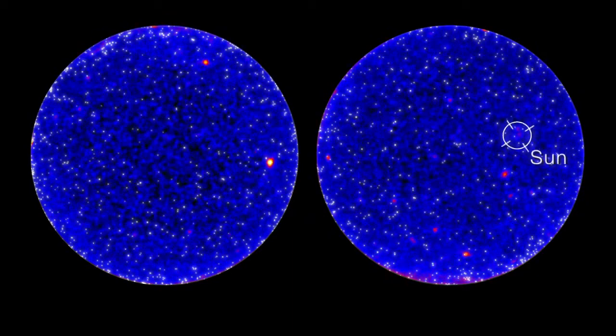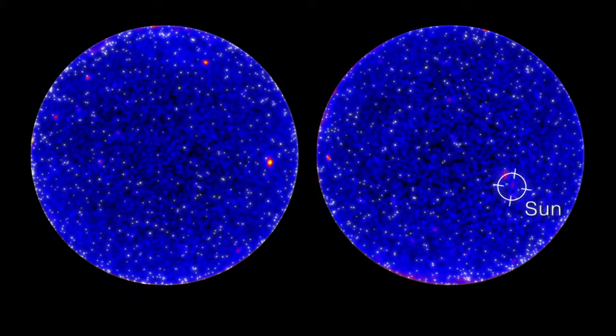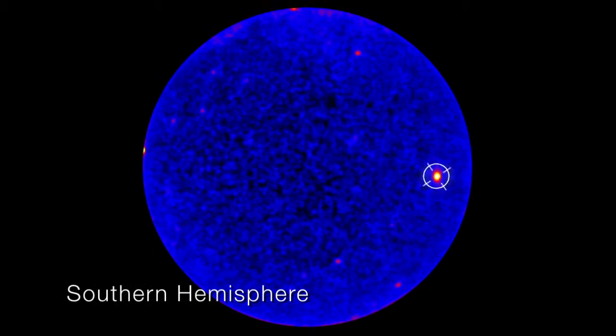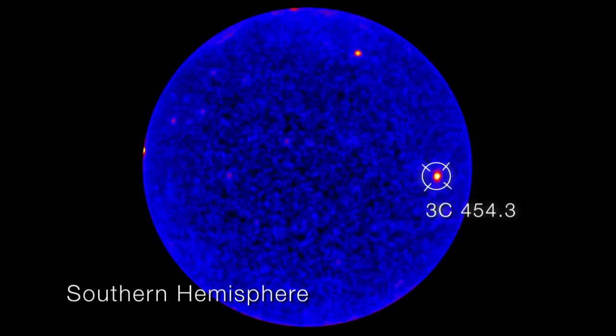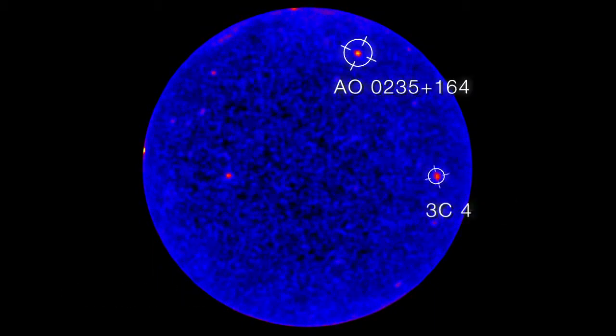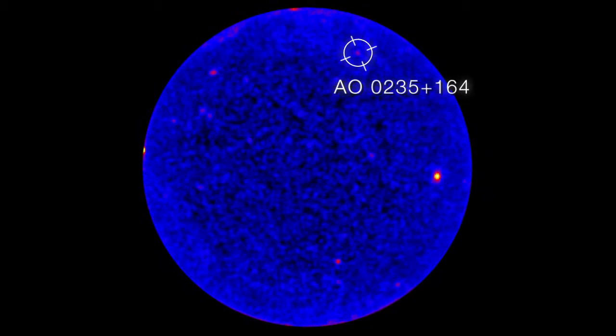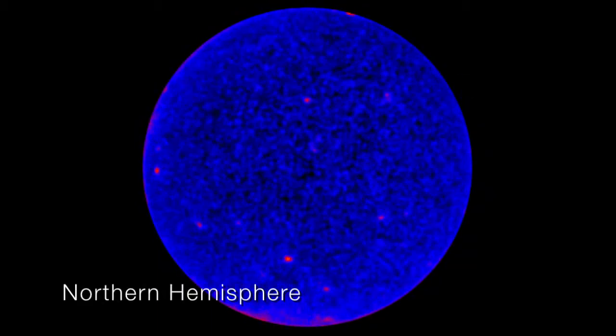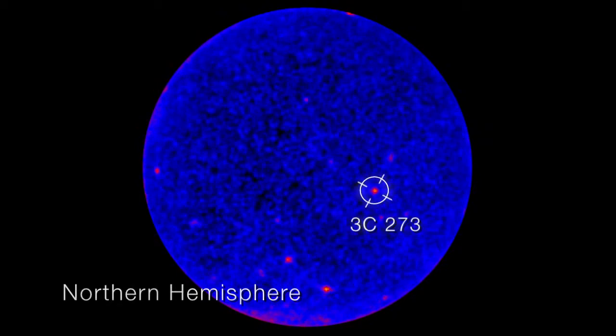As Fermi continues to watch the sky, it builds a more complete picture of the daily lives of these powerful objects. Some of the flares we see announce the presence of blazars we've never seen before. And sometimes we find a gamma ray flare that is not from a blazar, which is very exciting. We hope to discover new types of gamma ray-emitting objects that we don't yet know about.